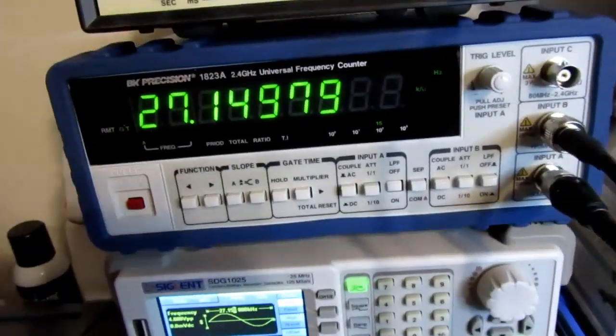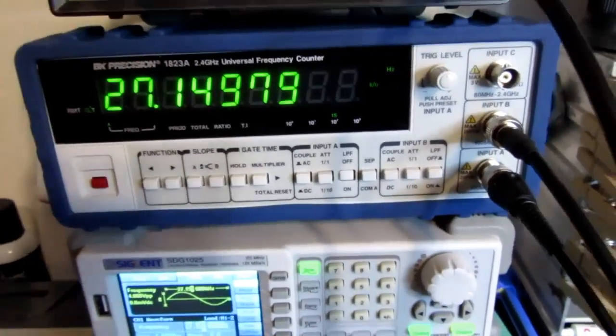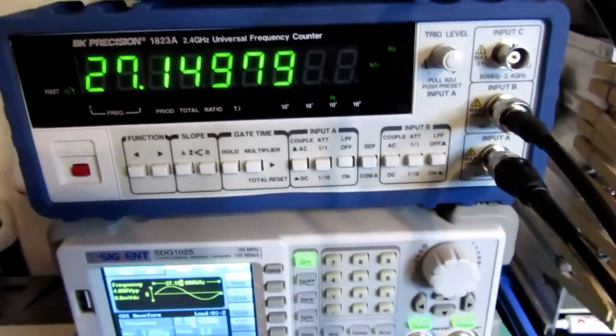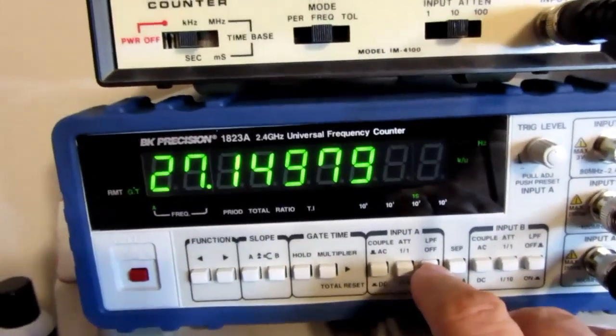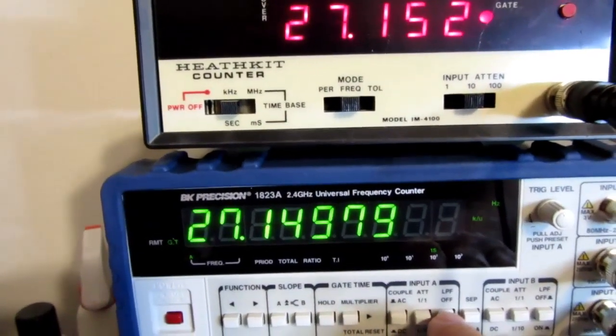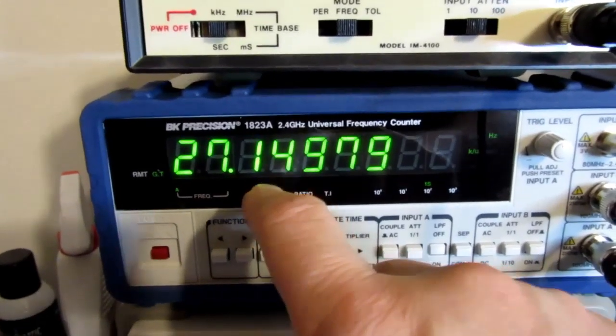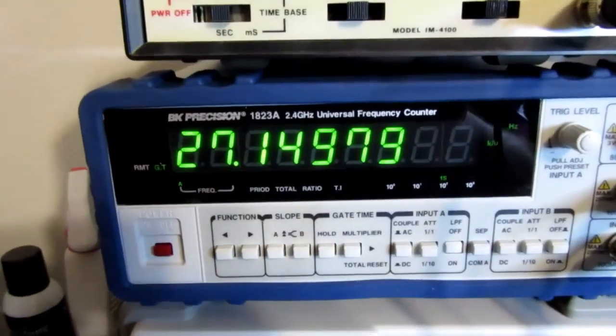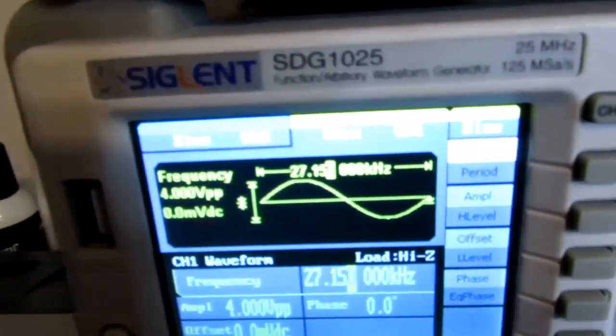And it may be picking up just a little bit of noise. These are high impedance inputs, so that unshielded section might be picking something up. So by putting in the low pass filter, I'm cutting out a high frequency element that it might be picking up, and that did seem to bring it in very close. It's now very stable at 27.149979, which is basically what it should be.